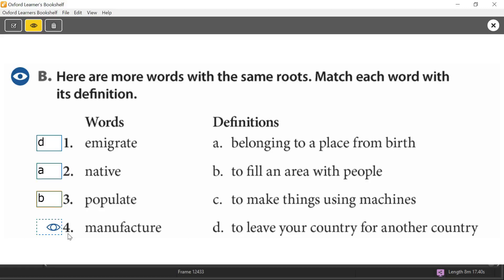And finally, number four. Manufacture. Manufacture. Manufacture. What is the root word here? F-A-C. Fact. And this is connected to making something. Do you remember? Making something. So manufacture is connected to the meaning of making something. Which definition is closest to this here? Of course, it's C. To make things using machines. To make things using machines. Let's have a look now. Excellent.